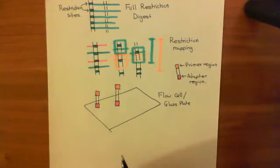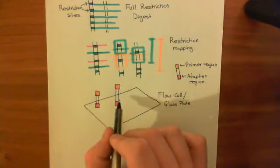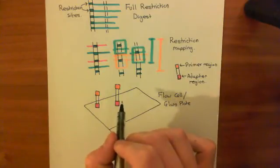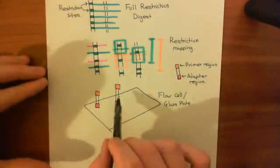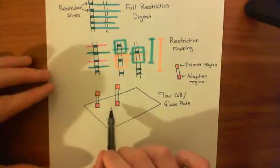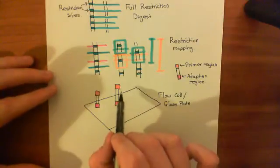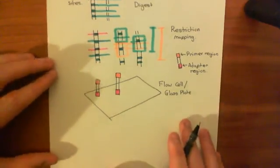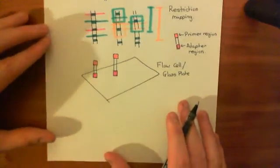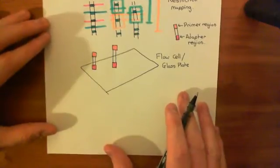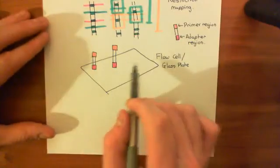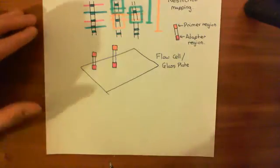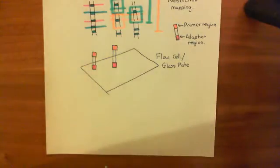So now what we need to do is we need to amplify each one of these pieces of DNA, because we need it to sit on this plate and have loads of identical fragments around it. We're going to amplify each one of these via PCR, and we're going to do PCR on the plate — on this flow cell.